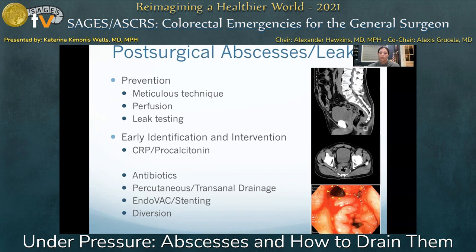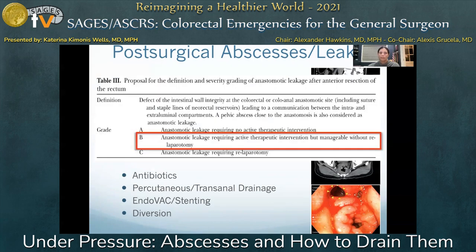A grading system for colorectal anastomotic leaks was developed by the International Study Group of Rectal Cancer. Grade A leaks are identified radiographically in the absence of clinical findings and can be managed expectantly. Grade B leaks require therapeutic intervention but not necessarily re-operation; antibiotics and percutaneous drainage are most common, with emerging experience in stenting and endovac therapies.